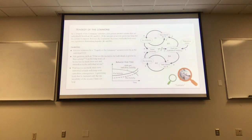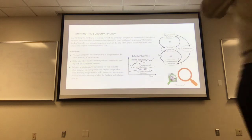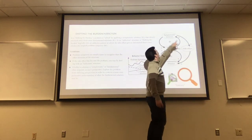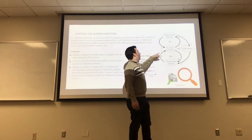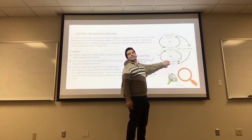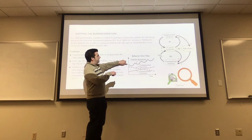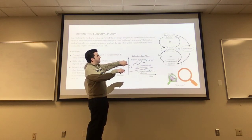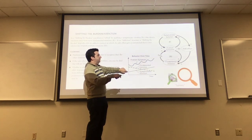But there's another way we can view this system — shifting through a different lens, a different color filter. When we look through this lens, we don't see a tragedy of the commons; we see shifting the burden. The shifting the burden archetype is: we have a problem symptom, there's a quick and easy solution that solves the symptoms, but there's a more fundamental solution. The more people use the quick and easy solution, the less the fundamental solution gets used. The behavior over time is that problem symptoms initially go down, but then come back and grow over time, while the fundamental solution goes to zero.